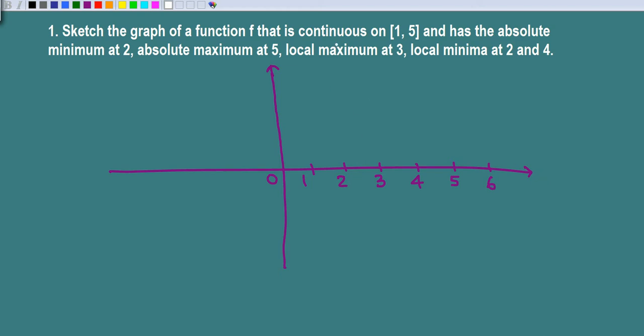We want to have a function continuous on 1 through 5, and it has the absolute minimum at 2. So at 2 we have the minimum - this is the lowest point on the graph.